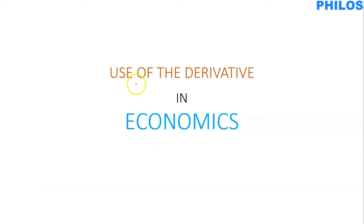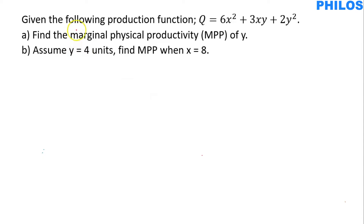Hi, let's take a question under the application of derivatives in economics and see how to solve it. The question says, given the following production function Q equals 6x squared plus 3xy plus 2y squared. Part A: find the marginal physical product, MPP of x and MPP of y.